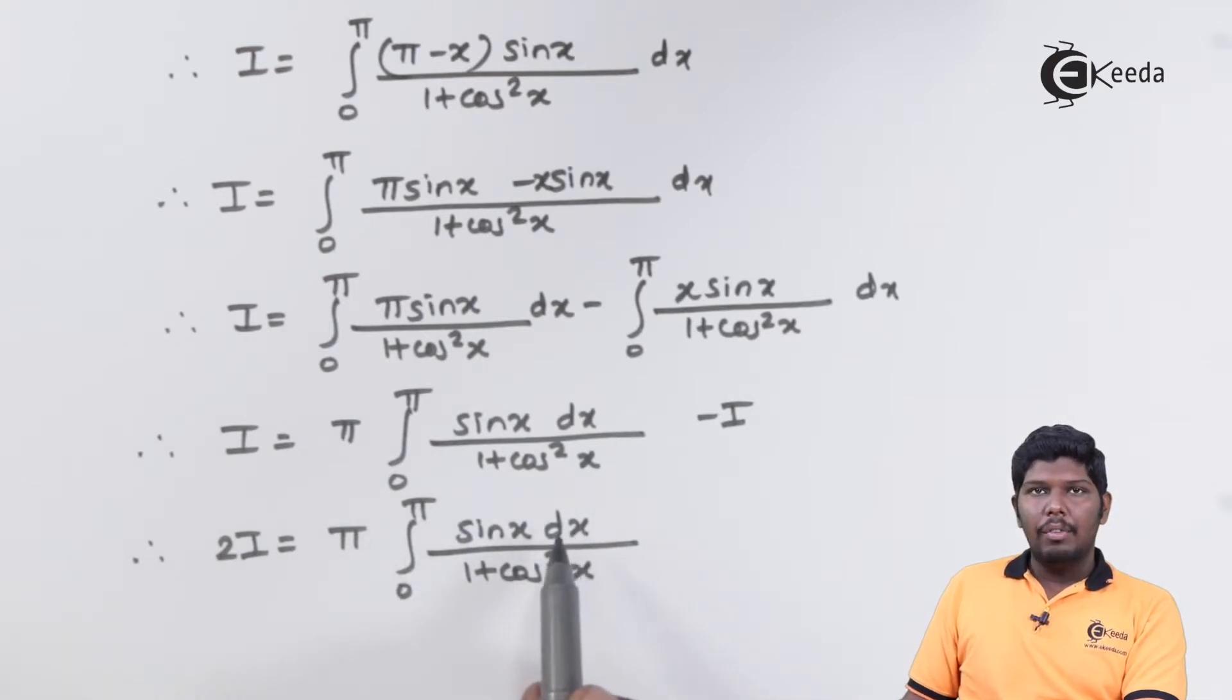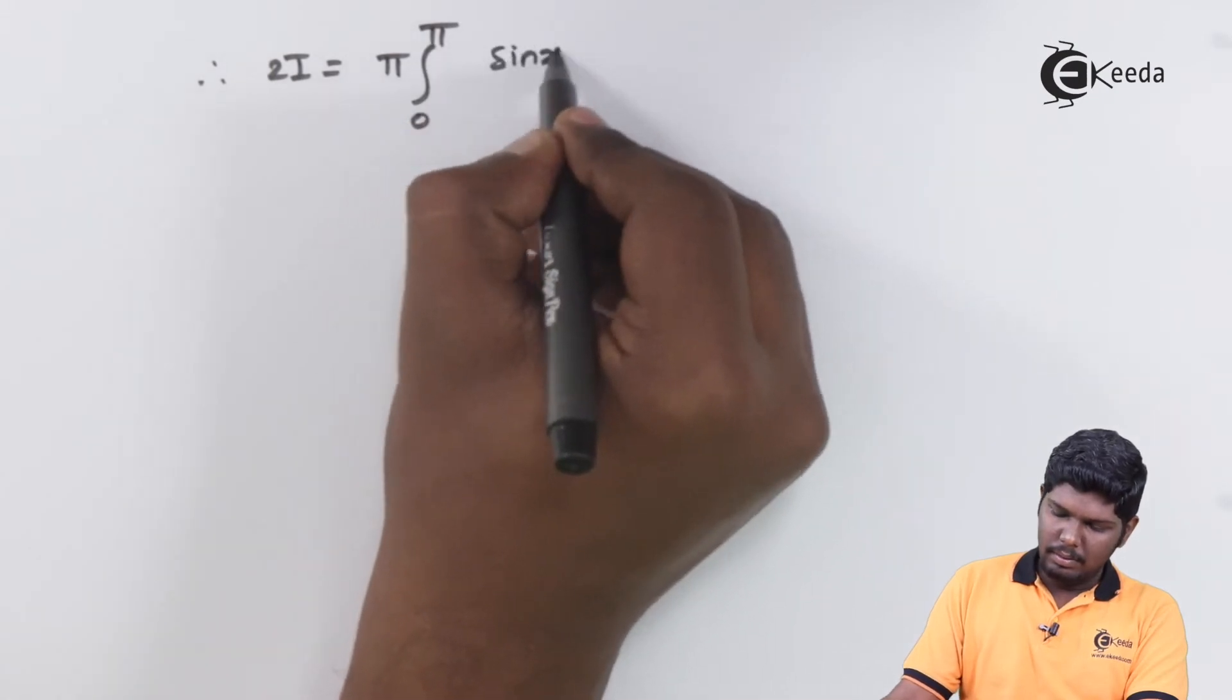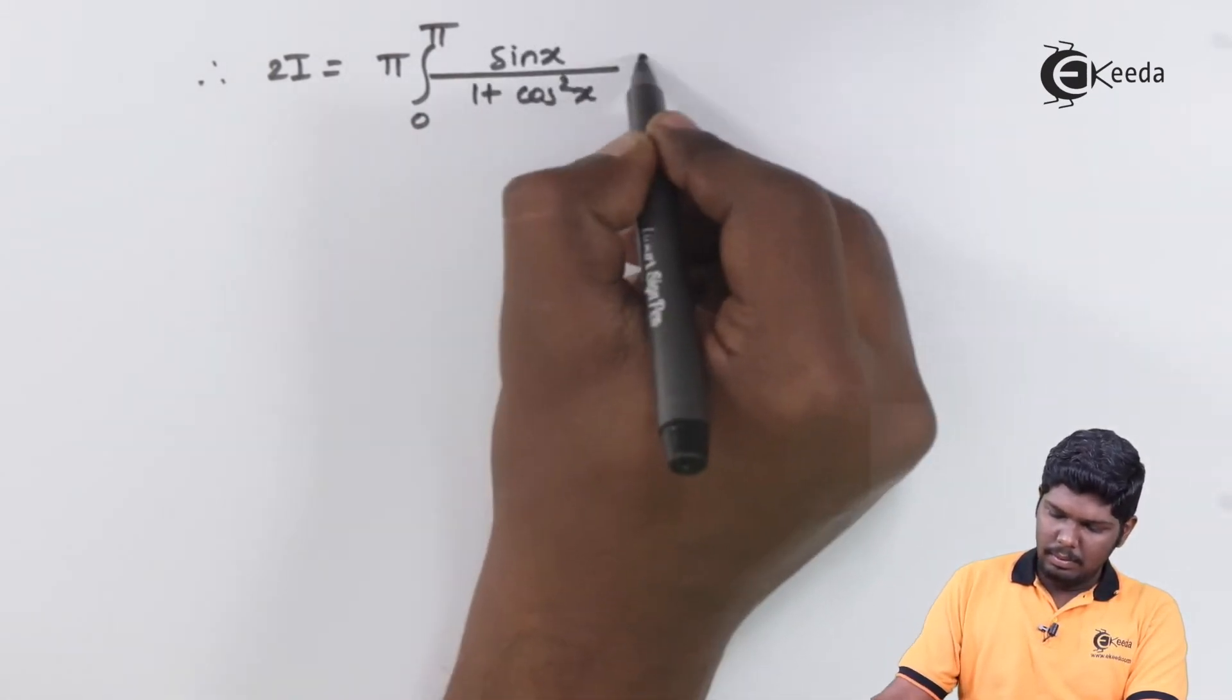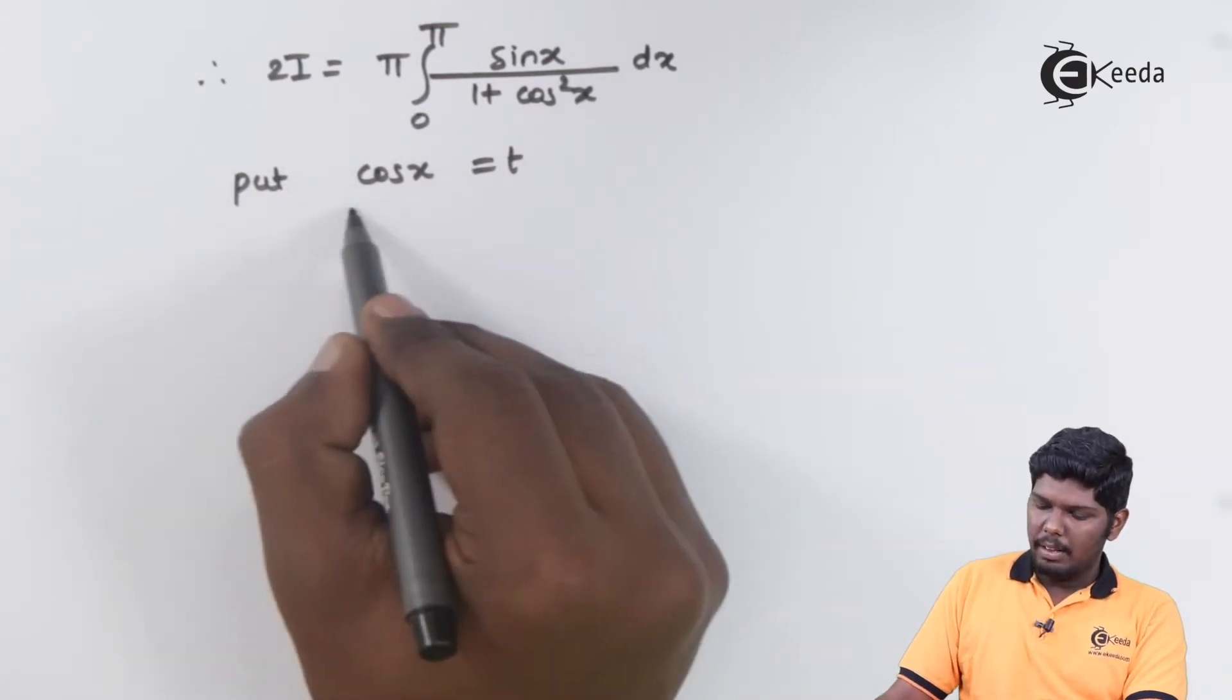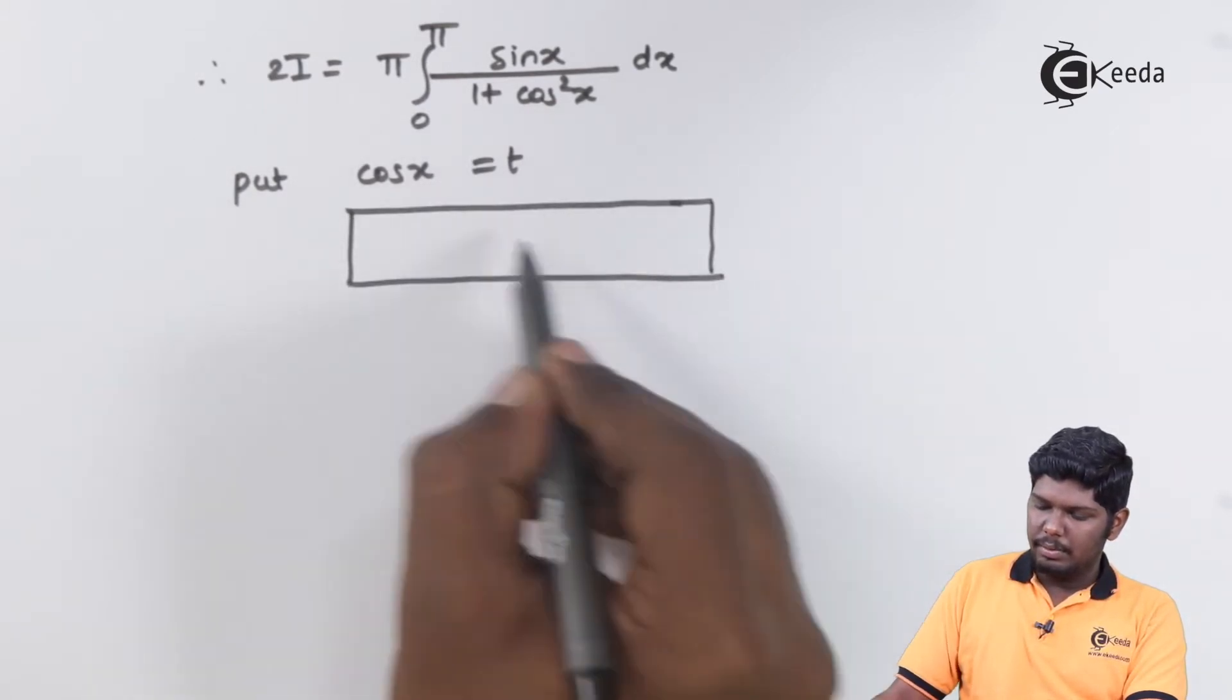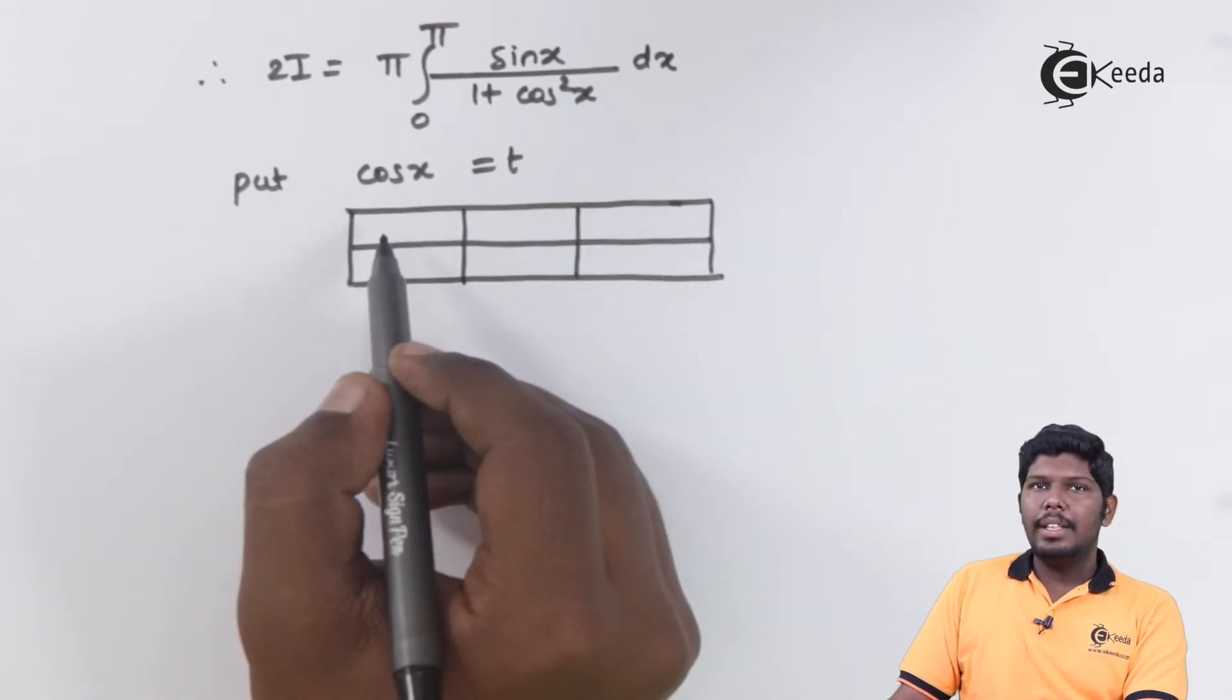To solve this integral, first you can substitute cos x as t as its derivative sin x dx is already present in the numerator. Cos x is equal to t. Now let us change the limit.